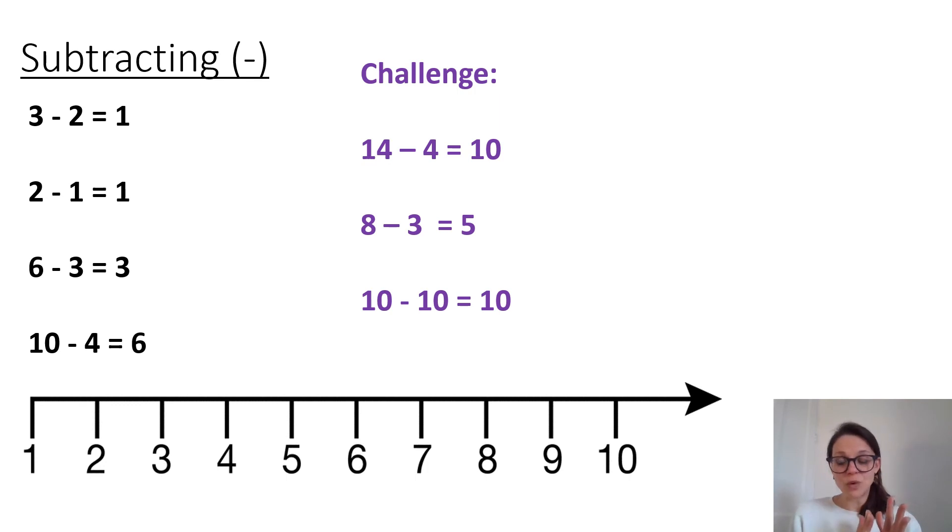Well done especially if you had a go at those trickier, challenge questions. 14 - 4 gives us ten because fourteen is four bigger than ten. 8 - 3 is five. And you could have used your number line there really carefully to help you.